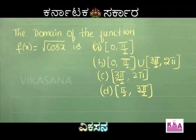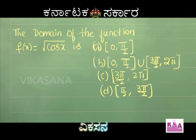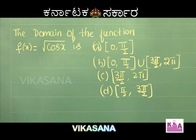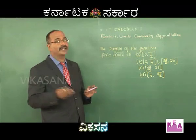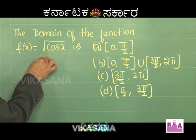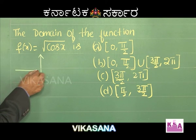Next problem: The domain of f(x) = √(cos x). Options: a) [0, π/2], b) [0, π/2] ∪ [3π/2, 3π], c) [3π/2, 2π], d) [π/2, 3π/2]. This is a simple problem. Let me draw the graph of cos x. The graph of cos x shows where it is positive or zero.